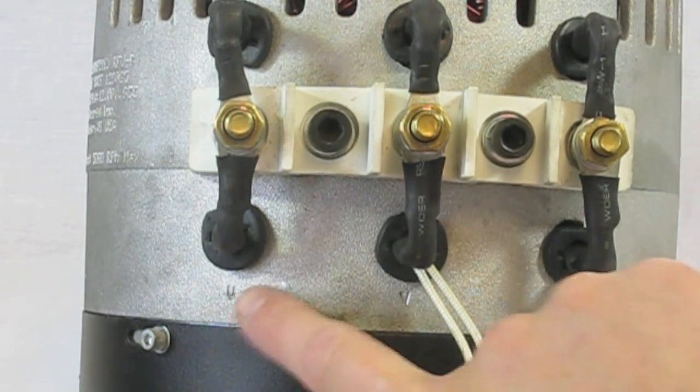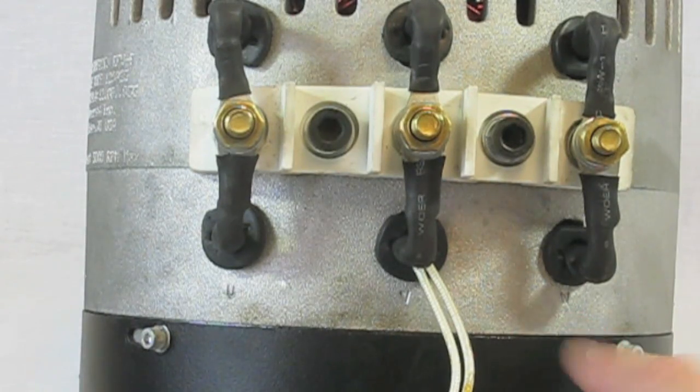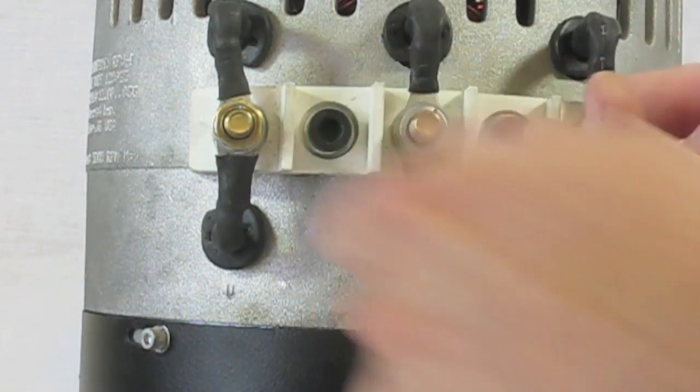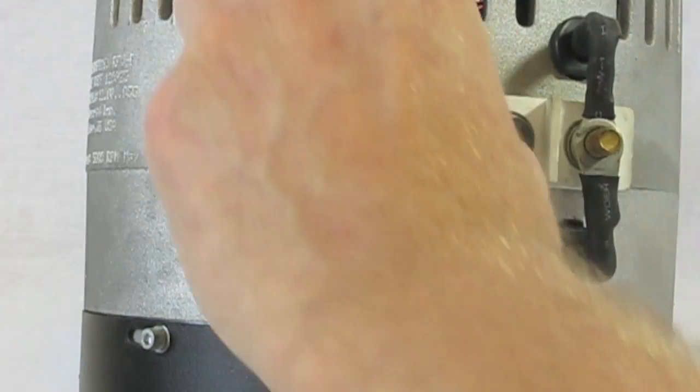On the motor casing you'll see stamped next to the phase leads UVW. Those will get hooked up to the controller U to M1, V to M2, and W to M3.